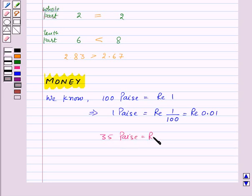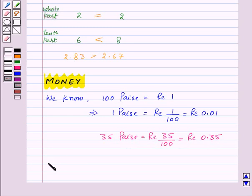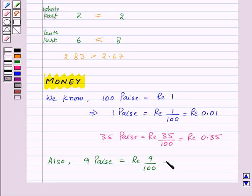35 upon 100 is equal to rupee 0.35 in decimals. Also, 9 paise is equal to rupee 9 upon 100, and this will be equal to rupee 0.09.